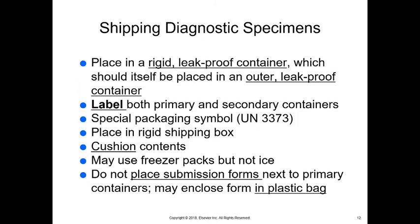All collected specimens should be placed in a rigid, leak-proof primary container with a secondary outer leak-proof container as well — at least two containers. Place an absorbent material such as paper towels around the primary container. Label both primary and secondary containers. Include the special packaging symbol UN3373 and ship in a rigid shipping box with cushioned contents.